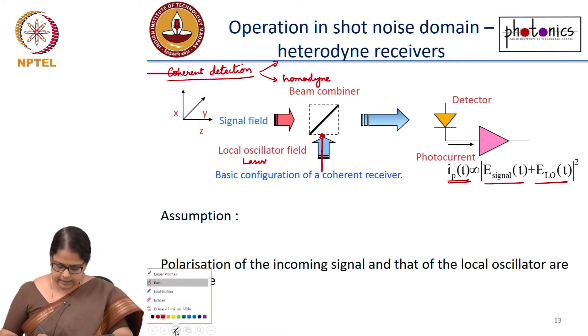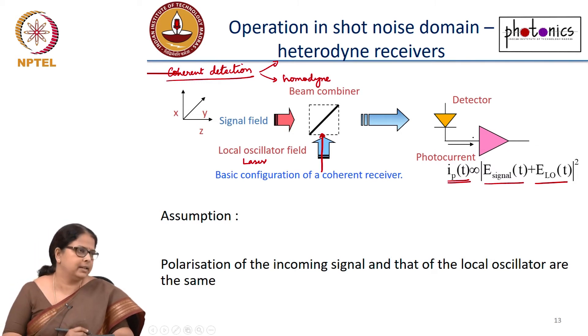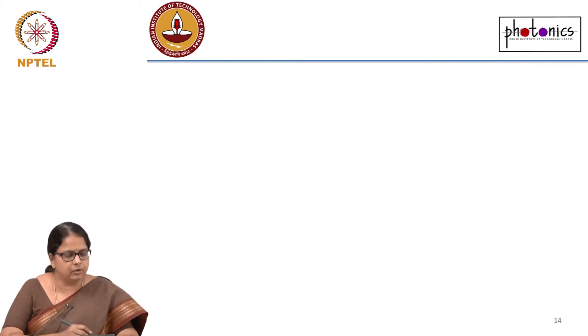Let us try to derive what is this current and what is the SNR of this case. Start with photocurrent. Let us start with intensity. Intensity is proportional to or normalized, equal to E signal plus E LO. Signal is changing as a function of time, there is modulation in it, amplitude modulation. LO does not have that amplitude modulation, it is a CW laser, continuous wave laser, an unmodulated laser mod square.